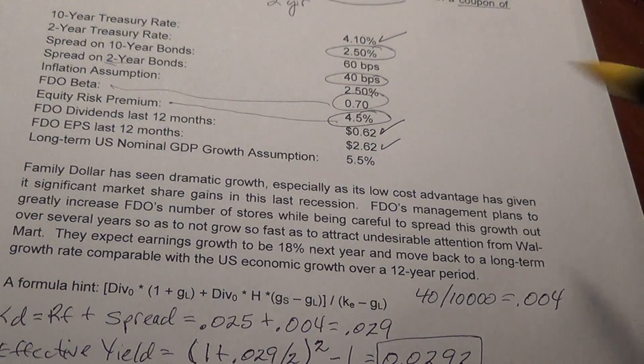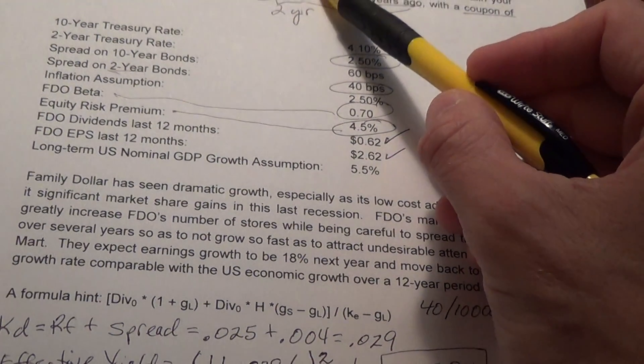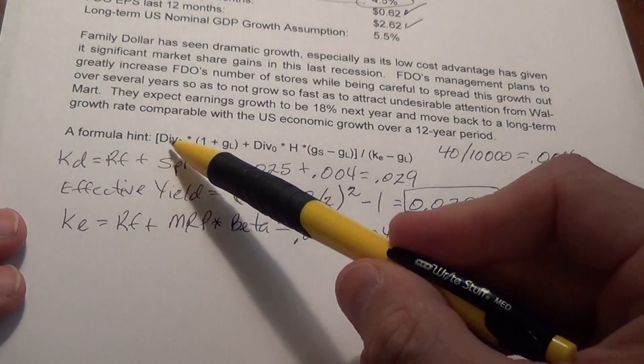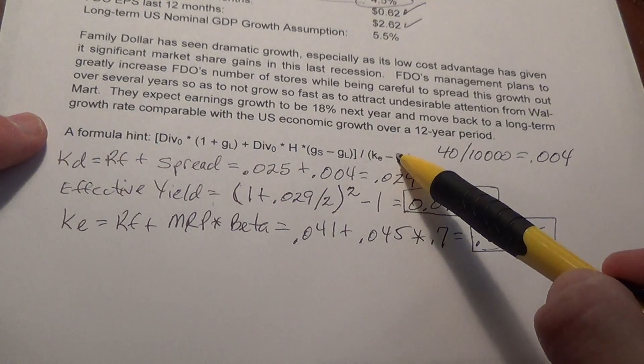We use three models: capitalized earnings, constant growth model, and the H model. And you'll notice that I've given the formula for the H model below. I don't say it's the H model, but it is the H model.